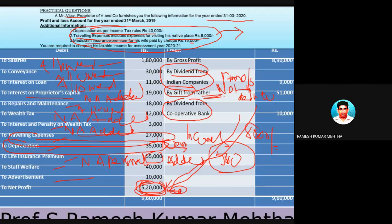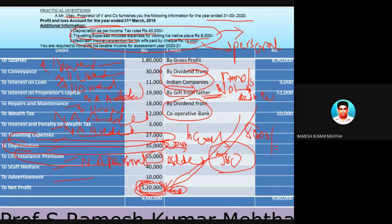Medical insurance premium for his wife of rupees fifteen thousand is included in life insurance premium. This is personal expenditure in nature — it cannot be claimed as a business expenditure and should not be debited to profit and loss account. We assume this life insurance premium is inclusive of this fifteen thousand rupees which is personal in nature, so it should be added back to profit.